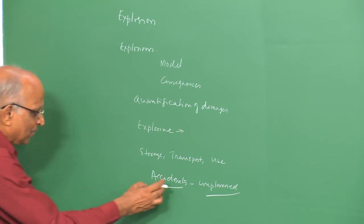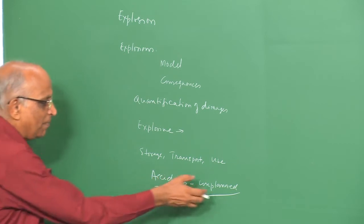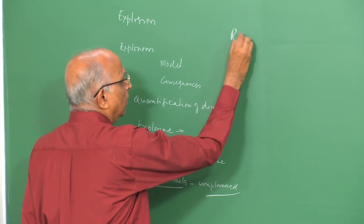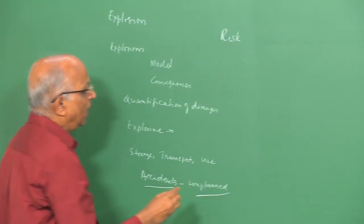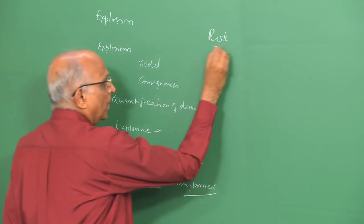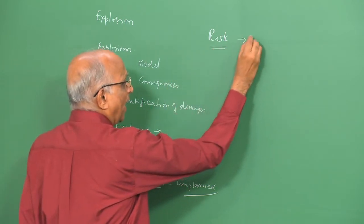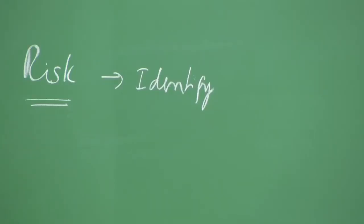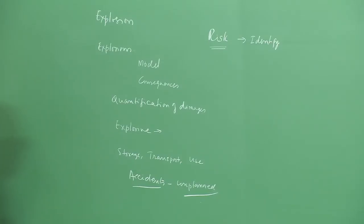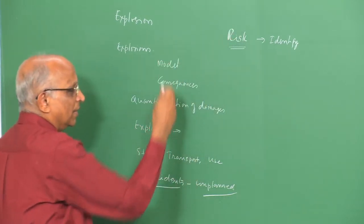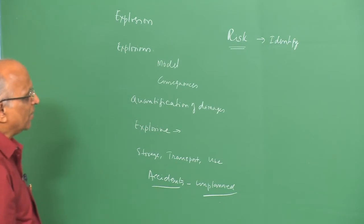Let us get into some more details of accidents. When we say an unplanned activity is an accident, there is always a risk involved in whatever we do, and there is a greater risk in the use of explosives. Therefore, if there is a risk, can we evaluate or identify the risk — for instance, identify the probability with which an explosion can take place in a given set of conditions? If we are clear about it, we can take steps to counteract the occurrence of these explosions.